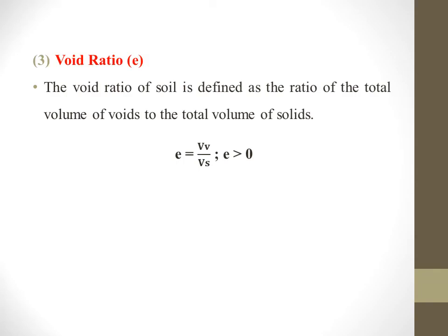The next one is void ratio, simply denoted by E. The void ratio of soil is defined as the ratio of the total volume of voids to the total volume of solids. It is expressed as E = VV / VS, where VV is the volume of voids and VS is the volume of solids. E will always be greater than zero.